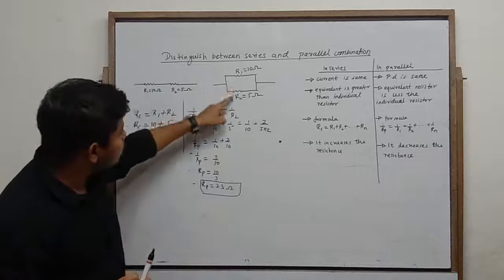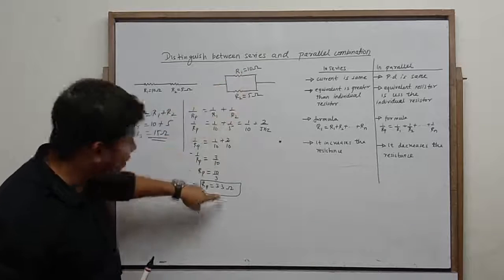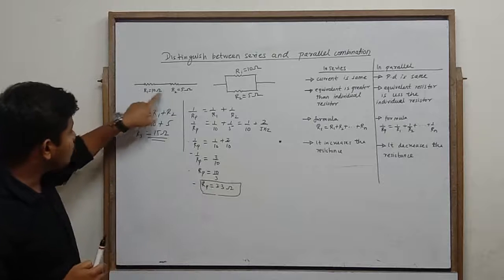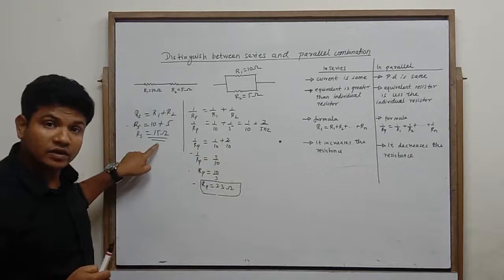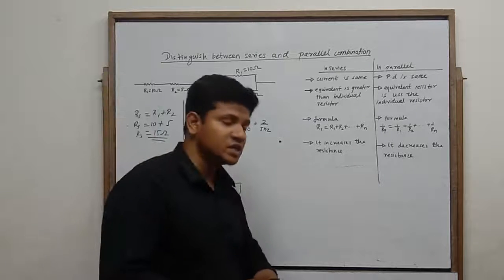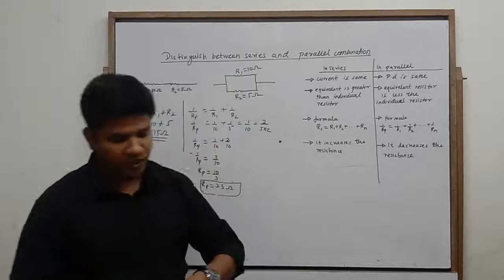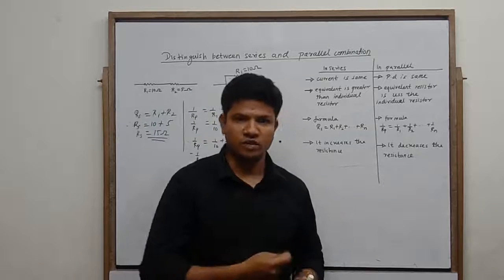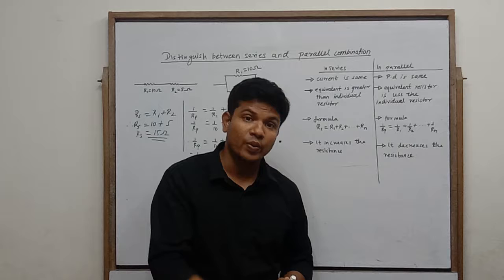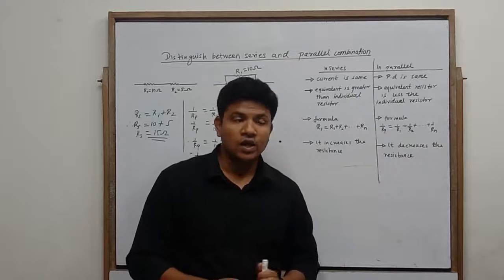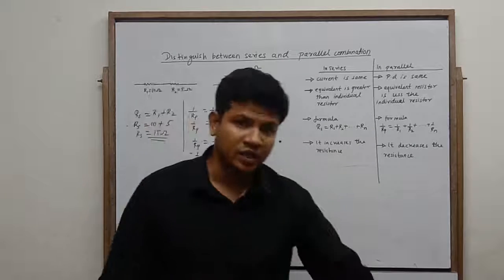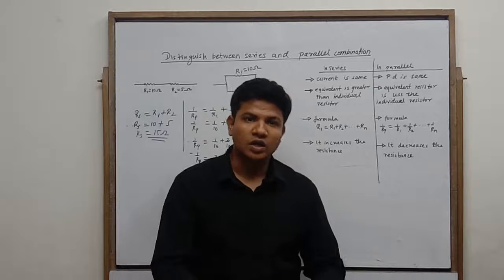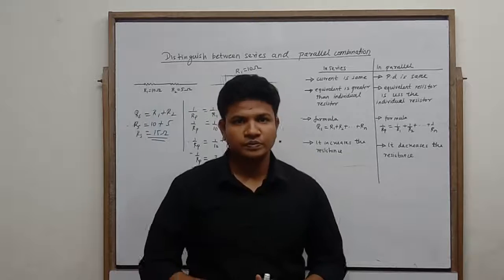Individual resistors 10 ohm और 5 ohm उनसे भी कम है parallel में। Important information यह है कि series में जब connect करते हैं तो equivalent resistor is greater than the individual resistor — उसकी value बढ़ी होती है। और जब connection parallel में करते हैं तो equivalent resistor is smaller than the individual resistor।